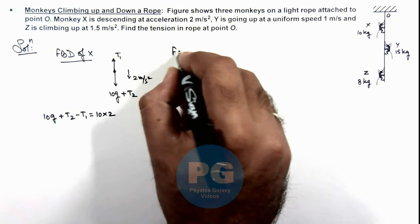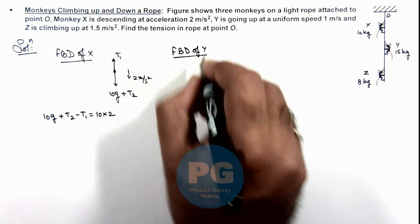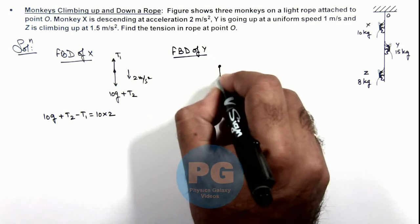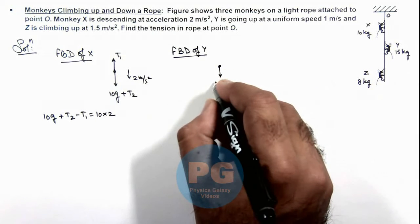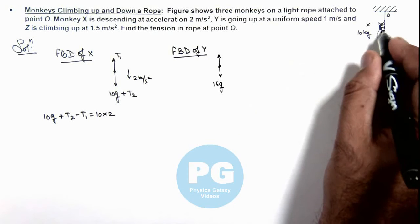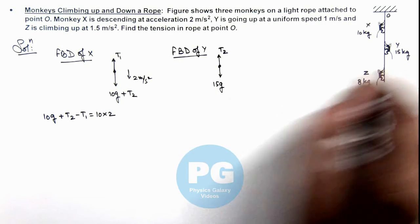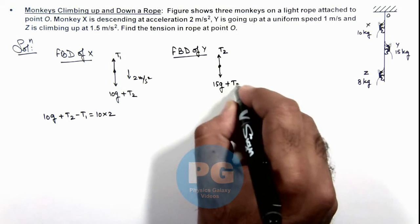Similarly, if we draw the free body diagram of monkey Y, here you can see downward its weight is 15g. Upward tension in this part of the string is T2, and downward tension here is T3, so it will act over here.